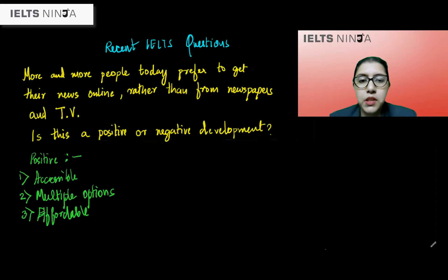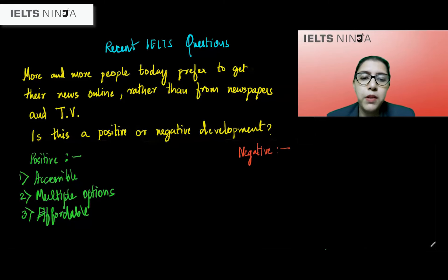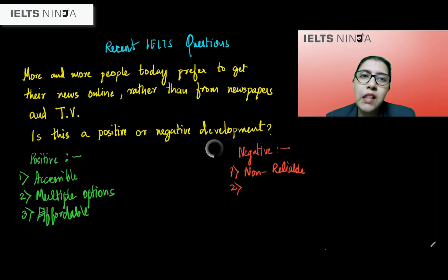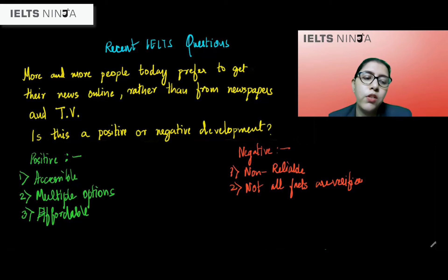Now let us look at some of the negative attributes, or the cons of this particular mode. One major negative attribute that most people quote is that most of the information online is non-verifiable or non-reliable. Another point is that online media, in its haste to give news instantaneously, does not always verify all facts, and I would go so far as to say that stories might be incomplete.